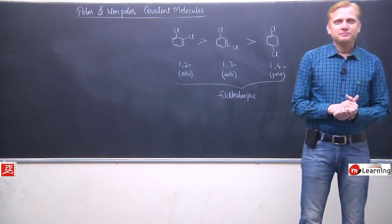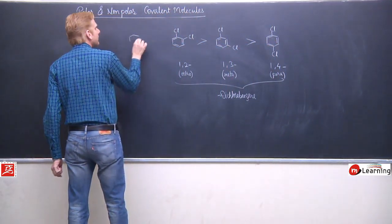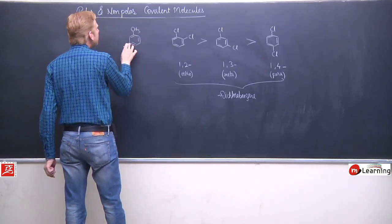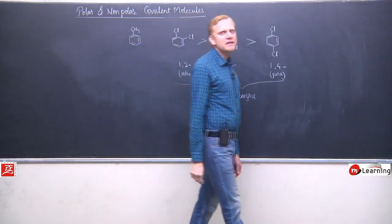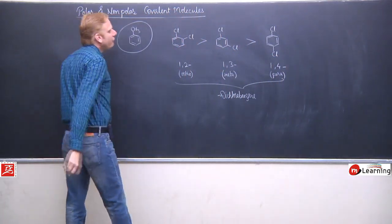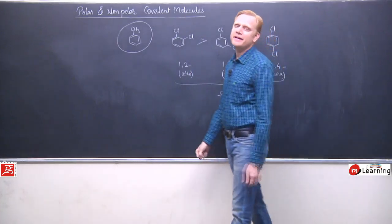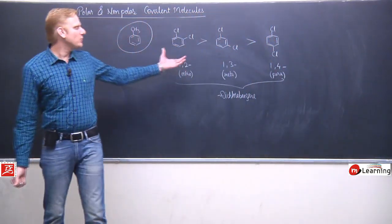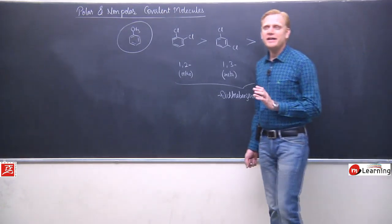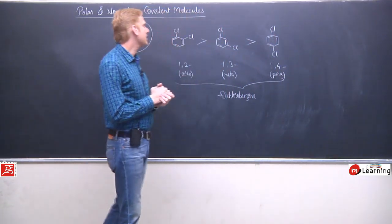When this question came in IIT, along with these three examples, there was a fourth in comparison, and that was toluene. Toluene means methyl benzene. When one hydrogen in benzene is replaced and a methyl group is attached, this is toluene. Now when the question was asked in IIT, toluene was also included in comparison with these three. Think about it - we identified the order of these three simply by looking at the angle. But if toluene is also there, how will you compare or where will you fit toluene?